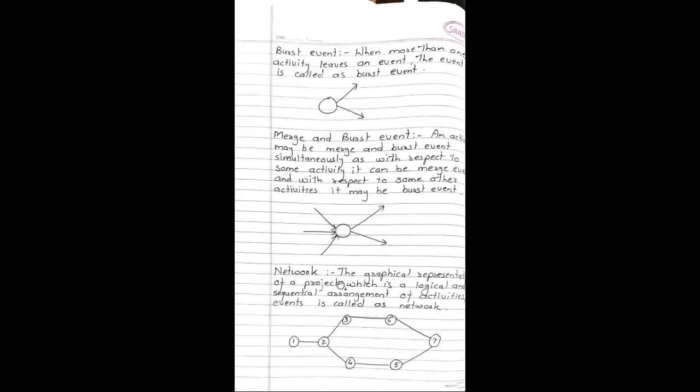Network: The graphical representation of project which is a logical and sequential arrangement of activities or events is called as network. This is the way we can draw the network: one, two, three, four, five, six, and seven. These are the node numbers and the arrows can be shown. Actually, arrows should have been shown in this particular network.